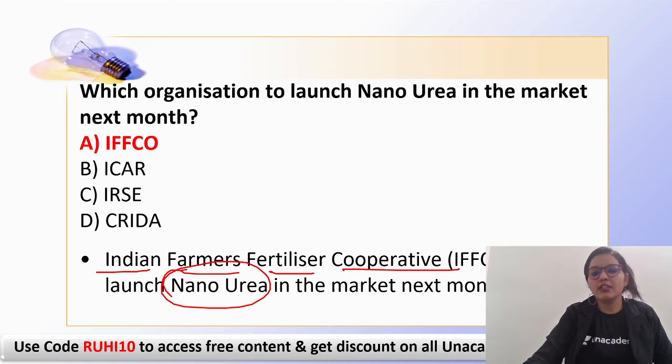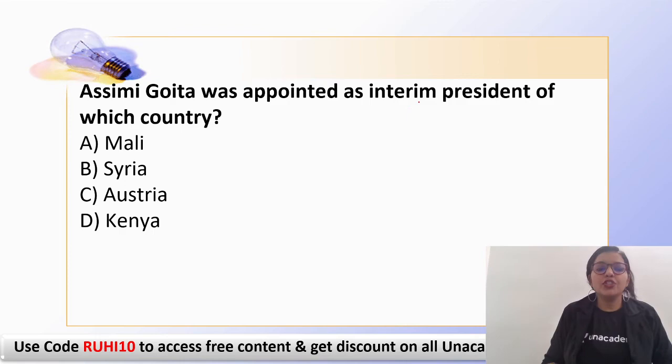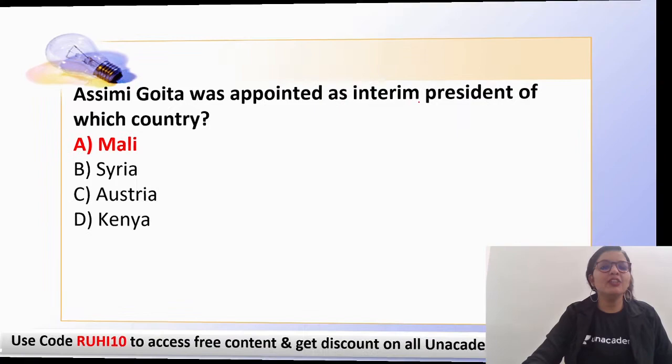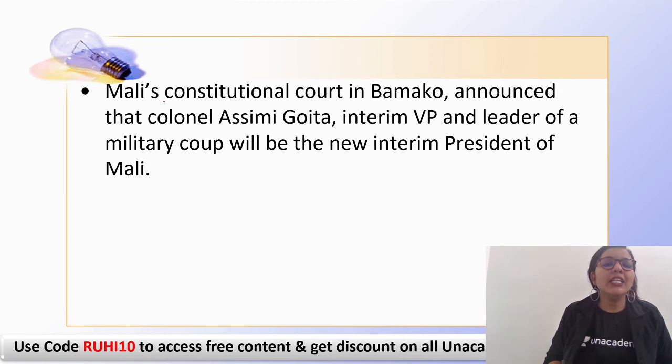The next question: Assimi Goita was appointed as the interim president of which country? The correct answer is Mali. Mali has announced Assimi Goita as its new interim president — note that 'interim' means he is not the final president but has been announced as the interim head of state.